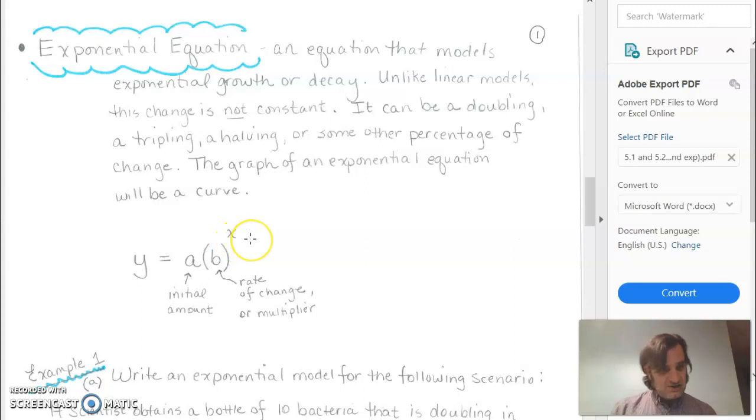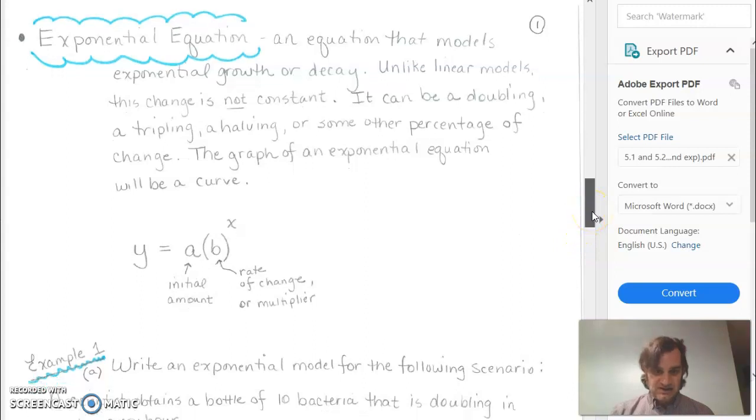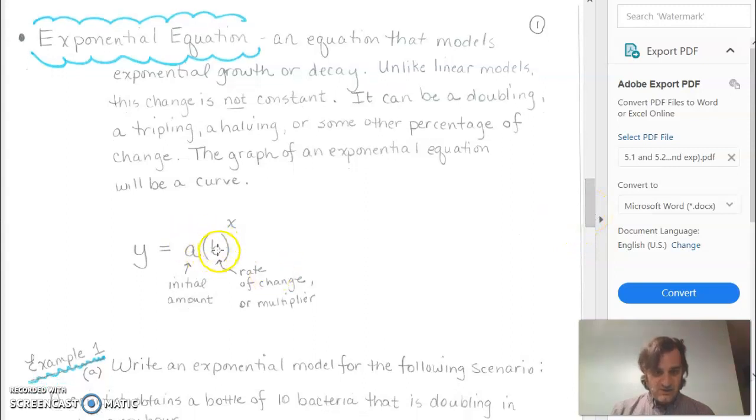Where in the linear equation, if we had 2 times x, that's just doubling whatever x is. So we're looking for what's happening as far as the ratio or multiplier and the starting amount to write an equation.